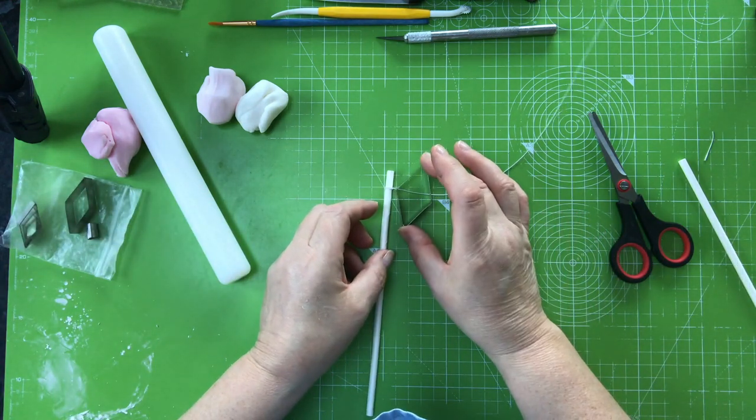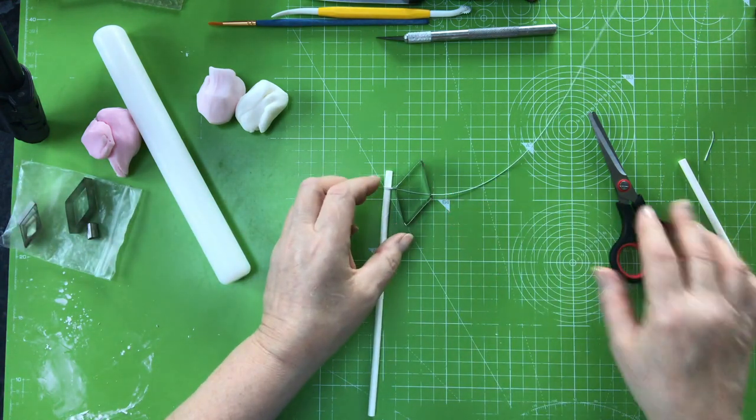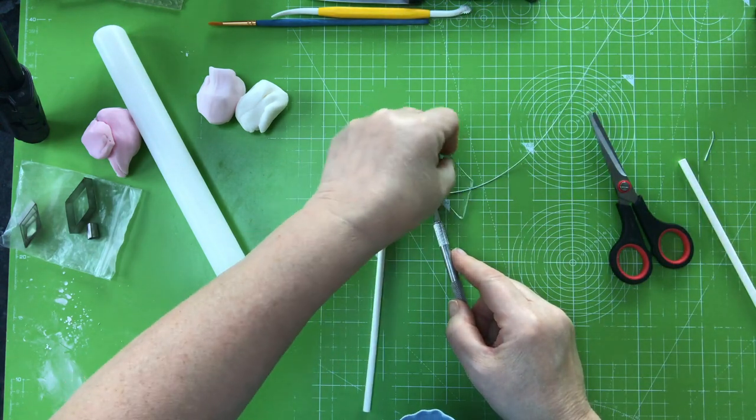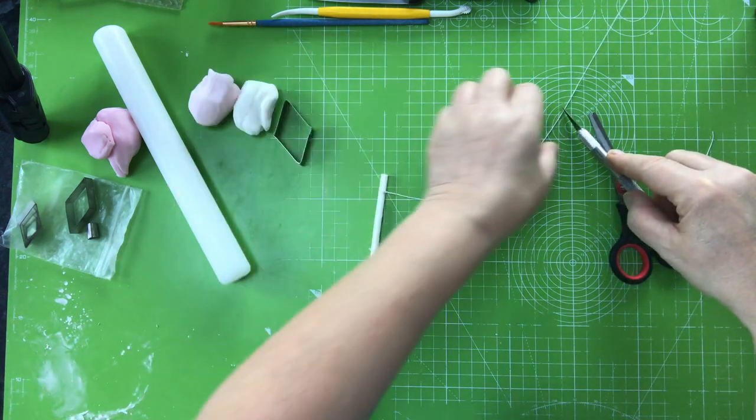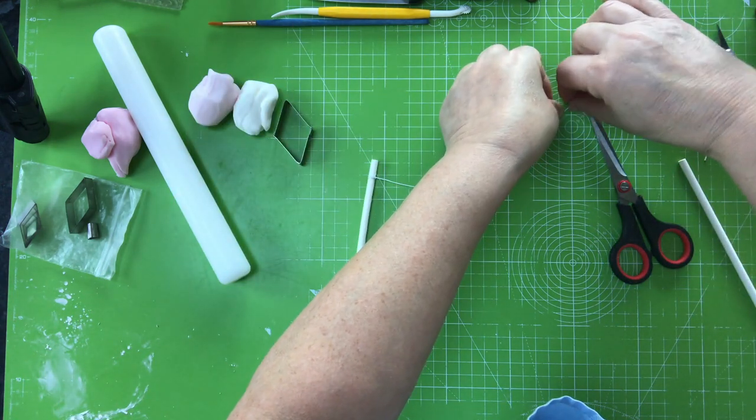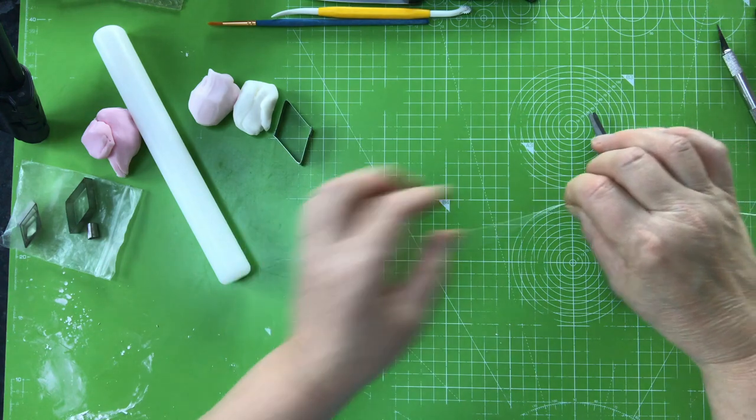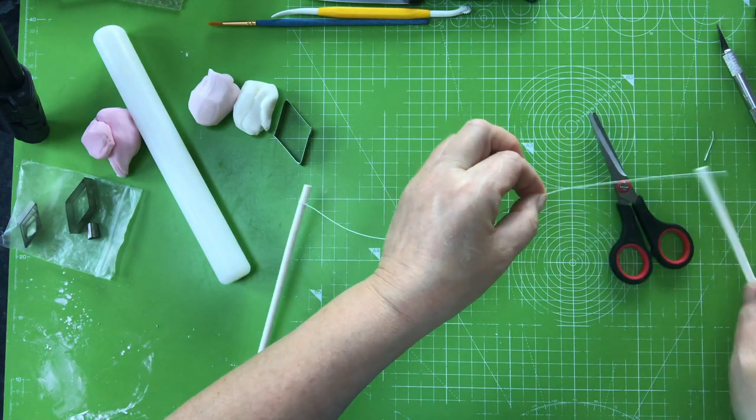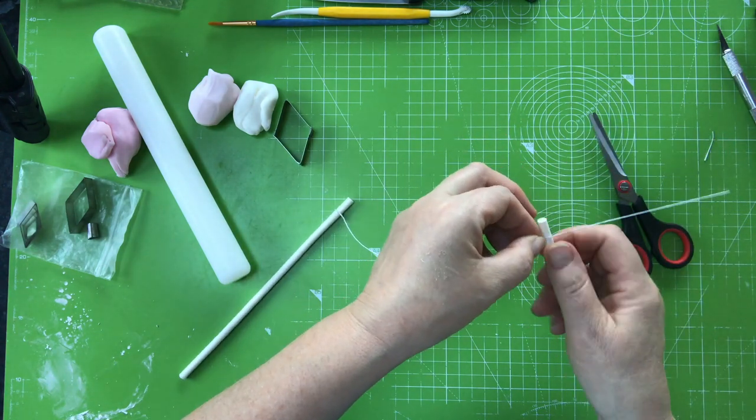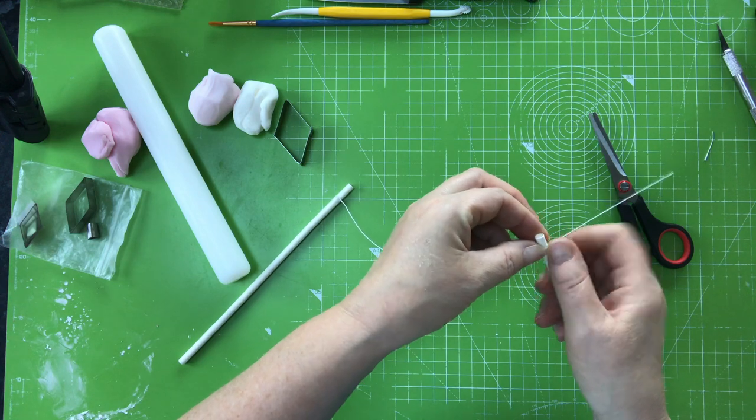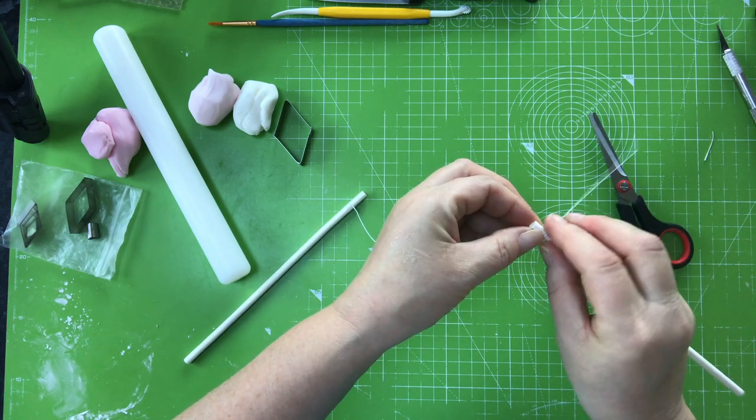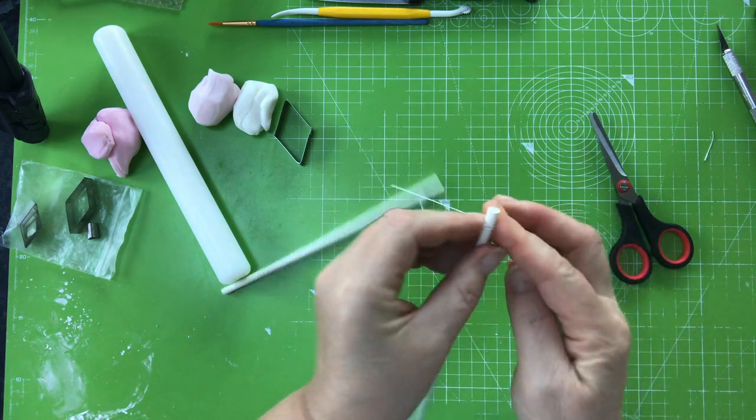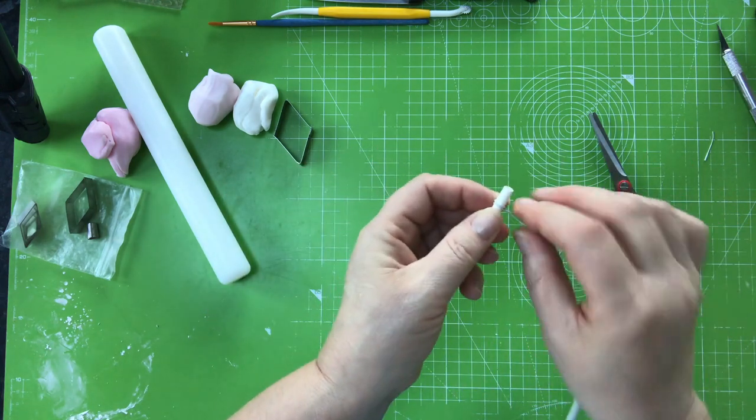You want to take about there, give yourself a little bit more room. Again on the top here, you want to be getting it around the same size as what you've got on the other one. With it being wire you can adjust it anyway.